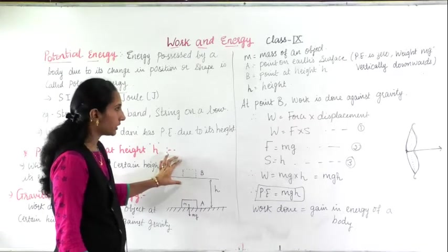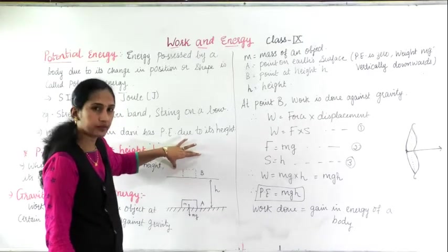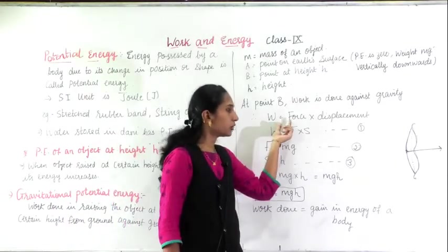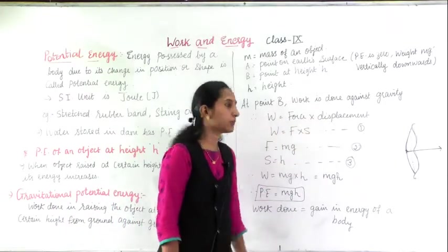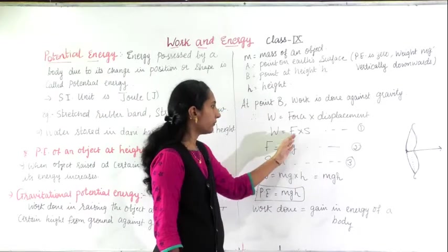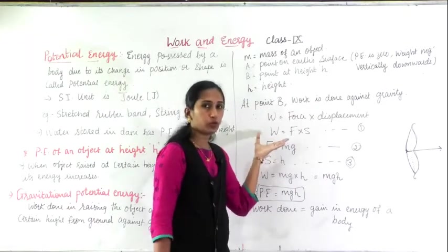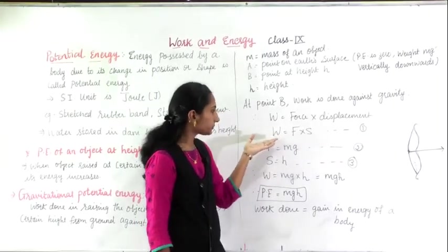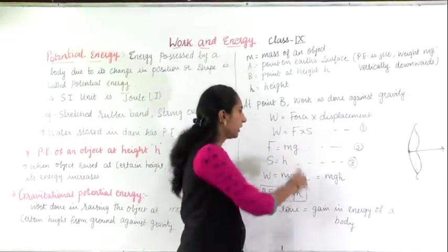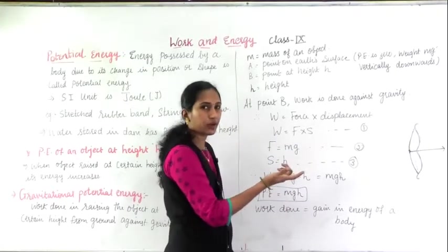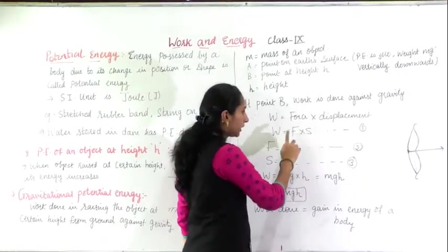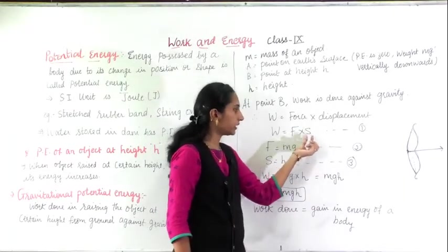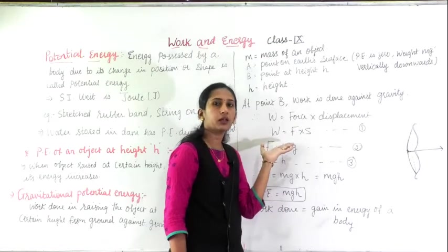Now what will be the work done? Work done W equal to force into displacement, that is F into S. As I told you, F equal to mg — mass of the object; here it is ma but with acceleration due to gravity, that is why F equal to mg. That is equation 2. Second, S equal to h — from one position to another, height is there. So S is considered as h. Putting equations 2 and 3 into equation 1, you get W equal to mg into h, that is mgh.